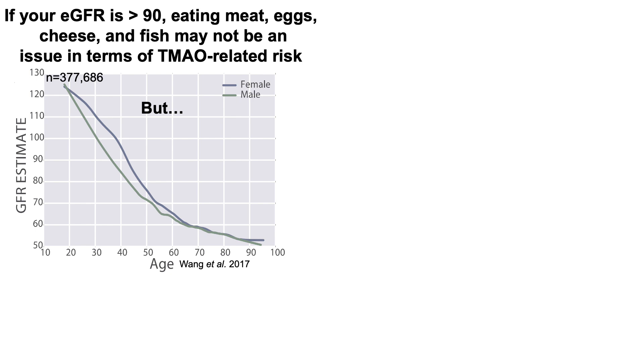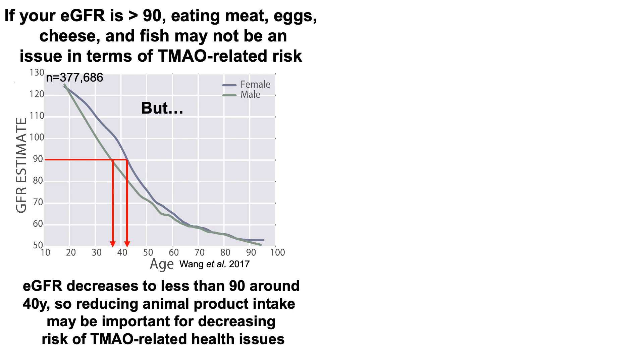So if your EGFR is greater than 90, eating animal products — including meat, eggs, cheese, and fish — may not be an issue in terms of TMAO-related risk. But EGFR declines during aging. This data from a study of about 378,000 people clearly shows EGFR declining with age — around 40 years of age, for both men and women, EGFR drops on average to less than 90. So reducing animal products if your EGFR is lower than 90 may be important for decreasing risk of TMAO-related health issues.